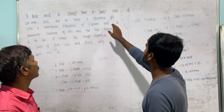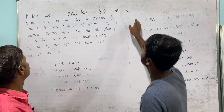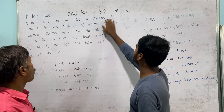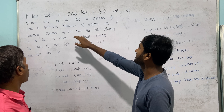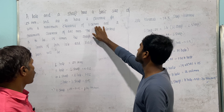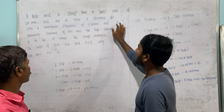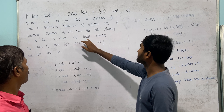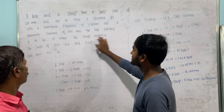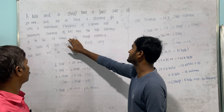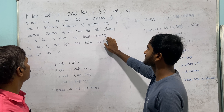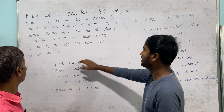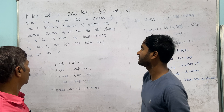A hole and a shaft have a basic size of 25mm and are to have a clearance fit with a maximum clearance of 0.02mm and a minimum clearance of 0.01mm. The hole tolerance is to be 1.5 times the shaft tolerance. Find the limits of both hole and shaft using the hole-based system.